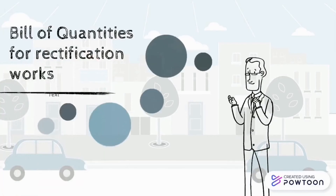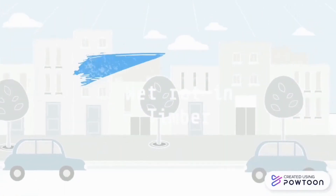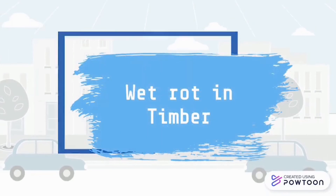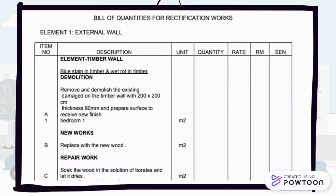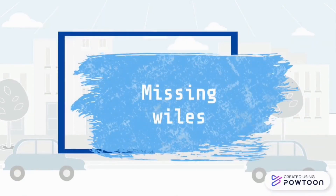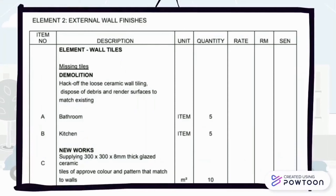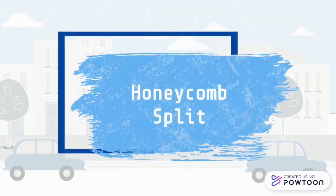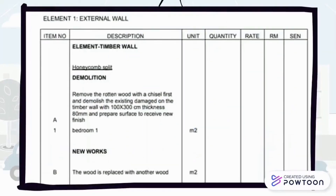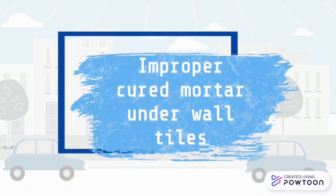Bill of Quantities for rectification works, covering: wet rotten timber, missing tiles, honeycomb split, and improperly cured mortar under wall tiles.